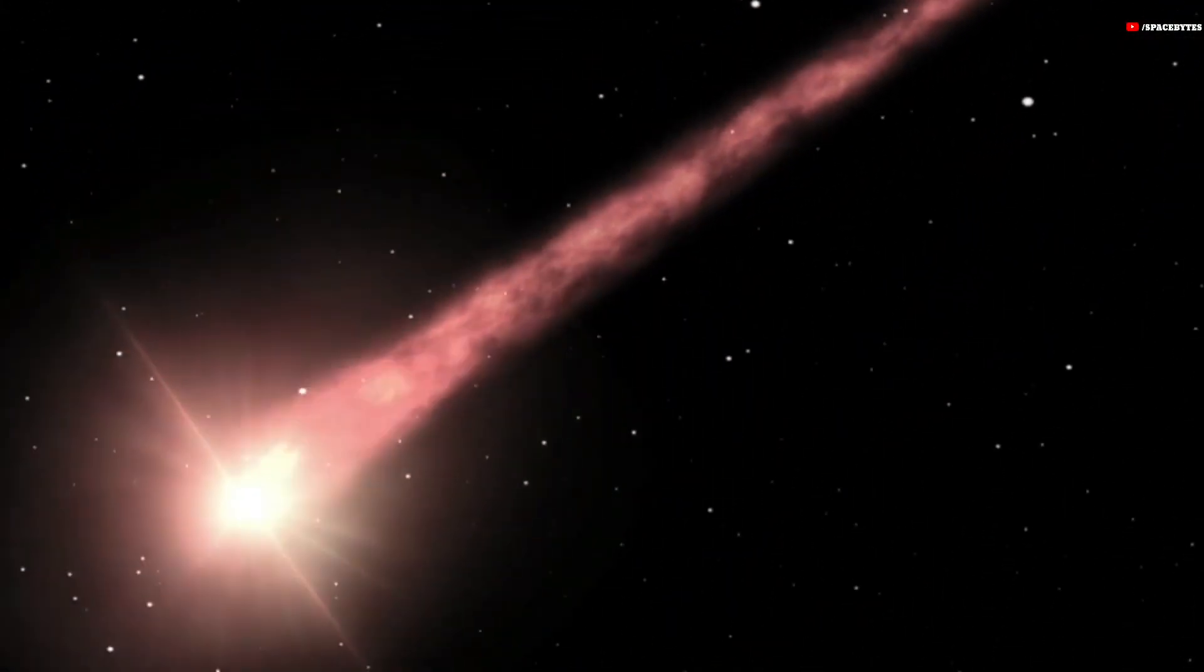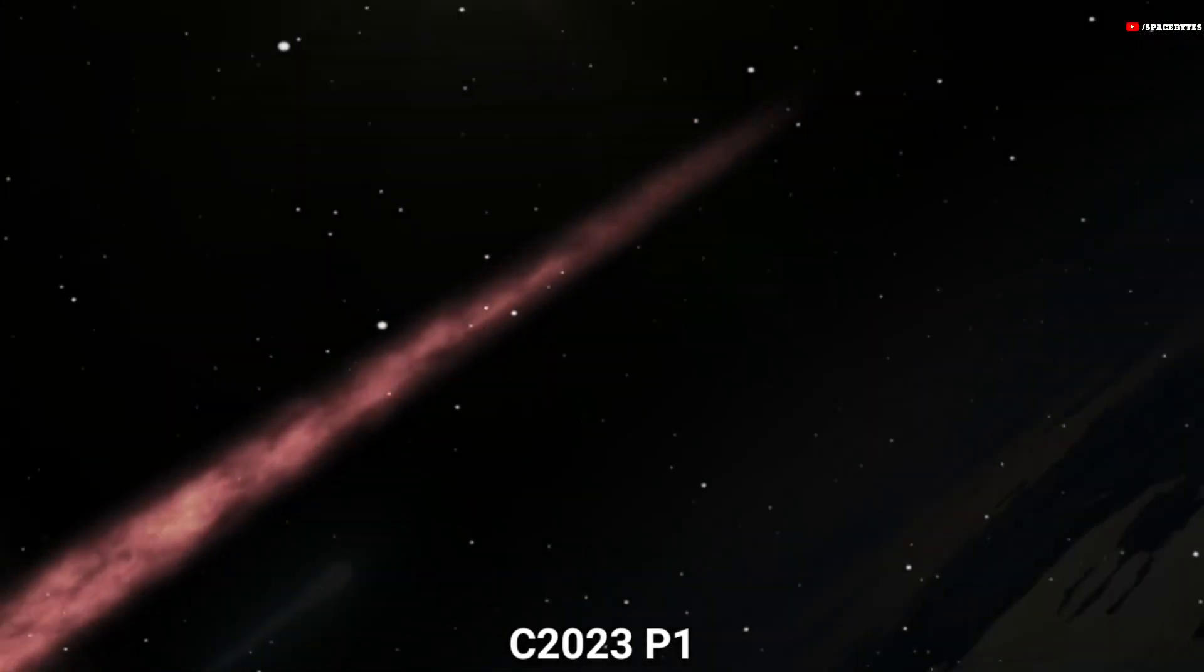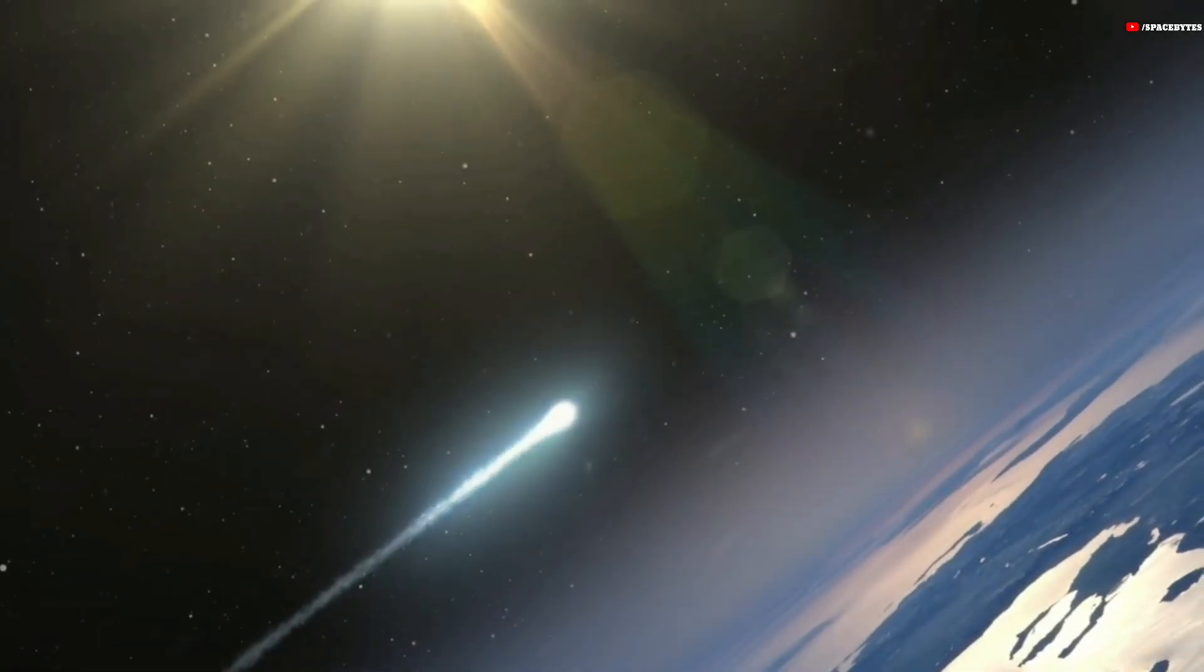Comet Nishimura is also called C2023P1. Ever since it was discovered, the comet has been increasing in brightness.